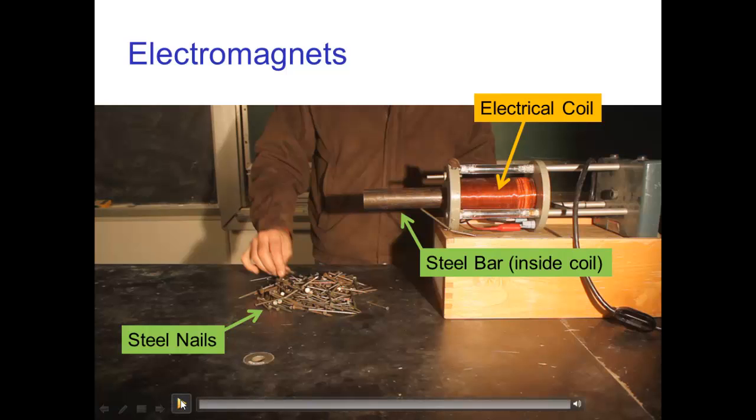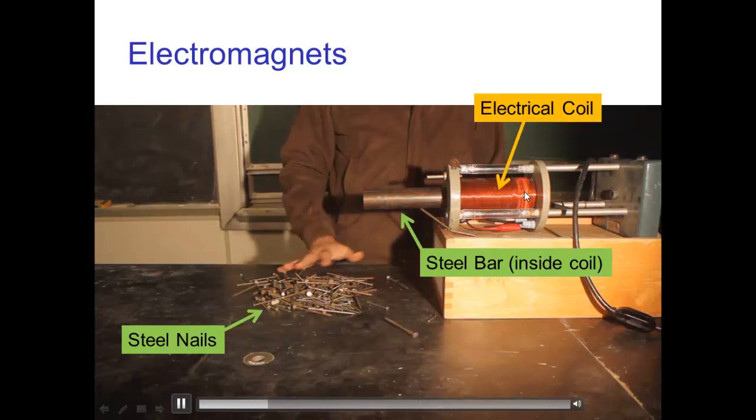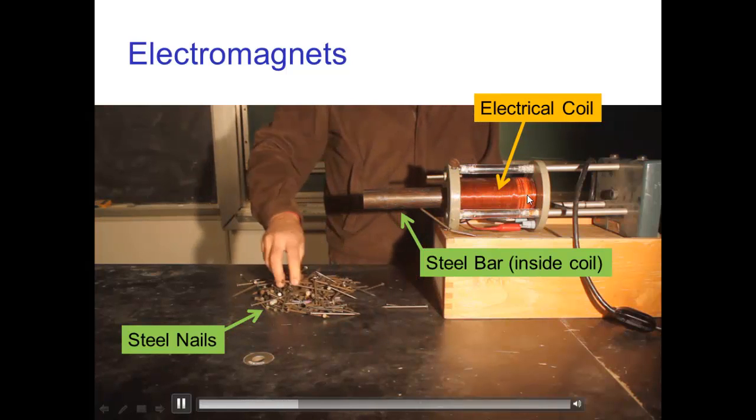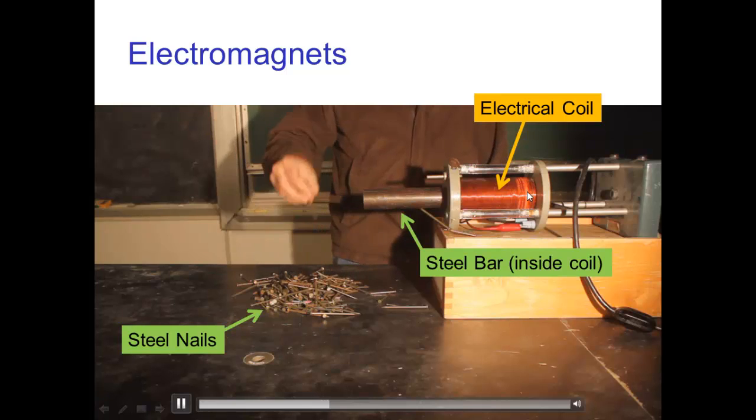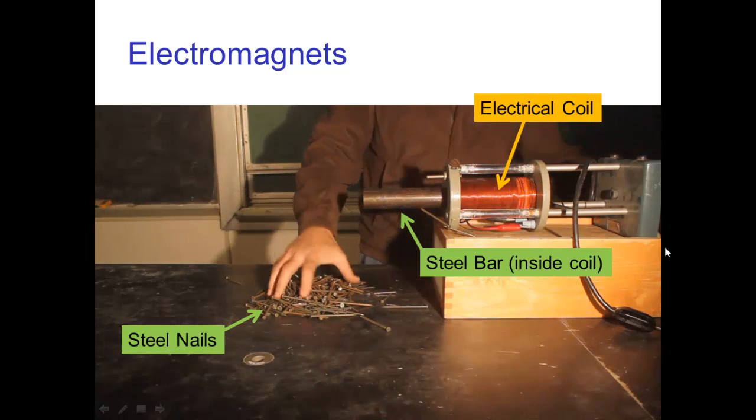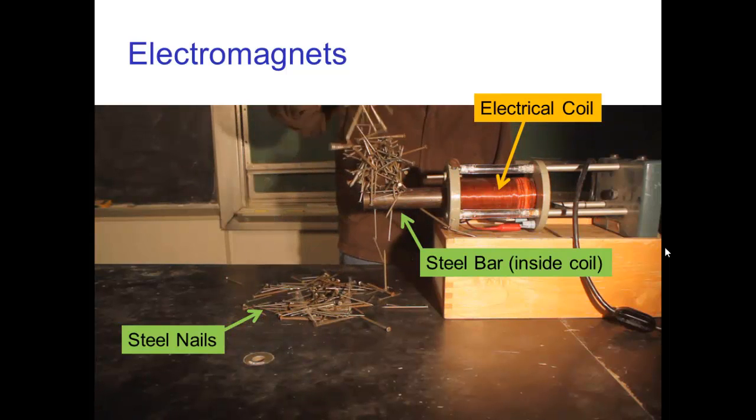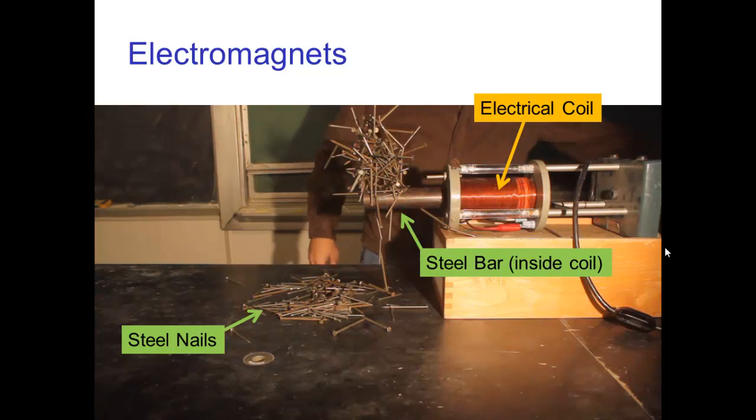Here's an example of that. I have an electric coil. A coil is just wire wrapped many times around in a circle. Now I'm turning on the electromagnet and now I'm turning it off.